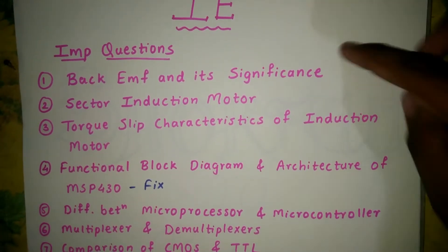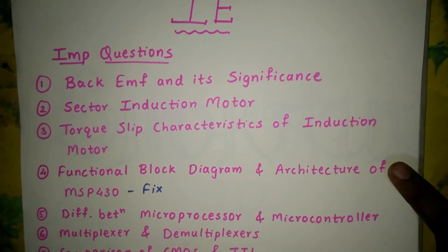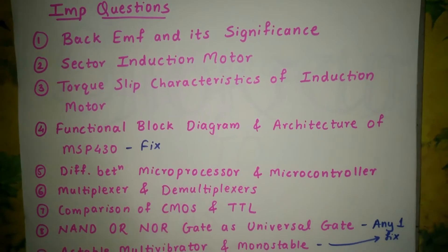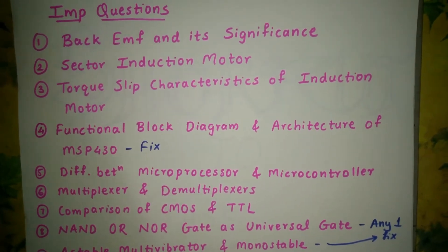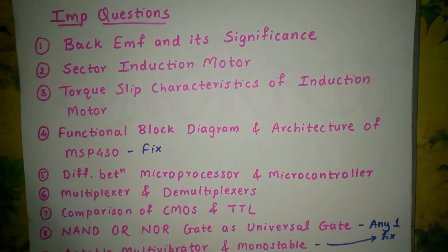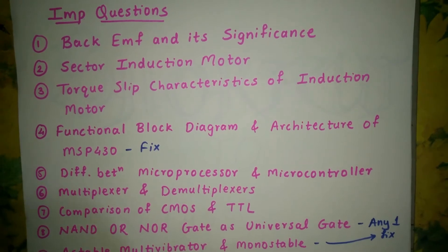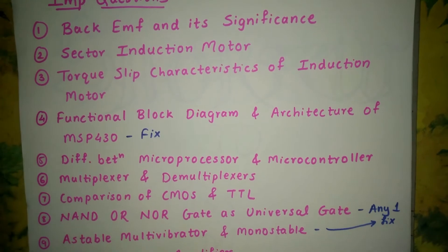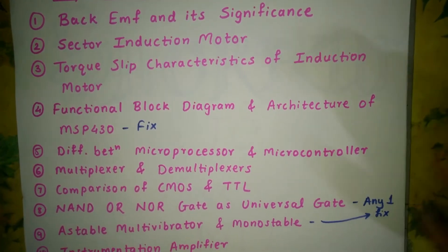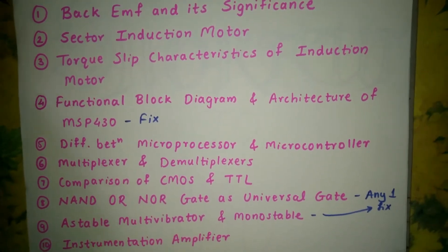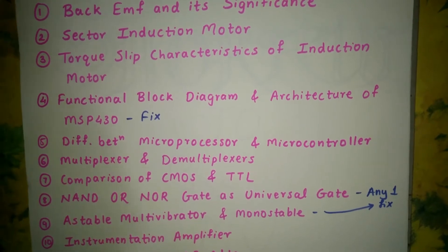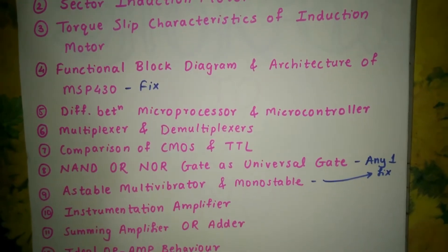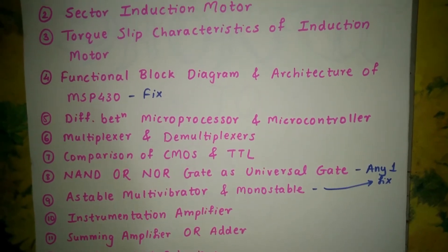These questions are asked for 5 marks, 8 marks, 10 marks, and sometimes 14 marks. The difference between microprocessor and microcontroller is also an important question asked many times. These two questions together can give you 20 marks.